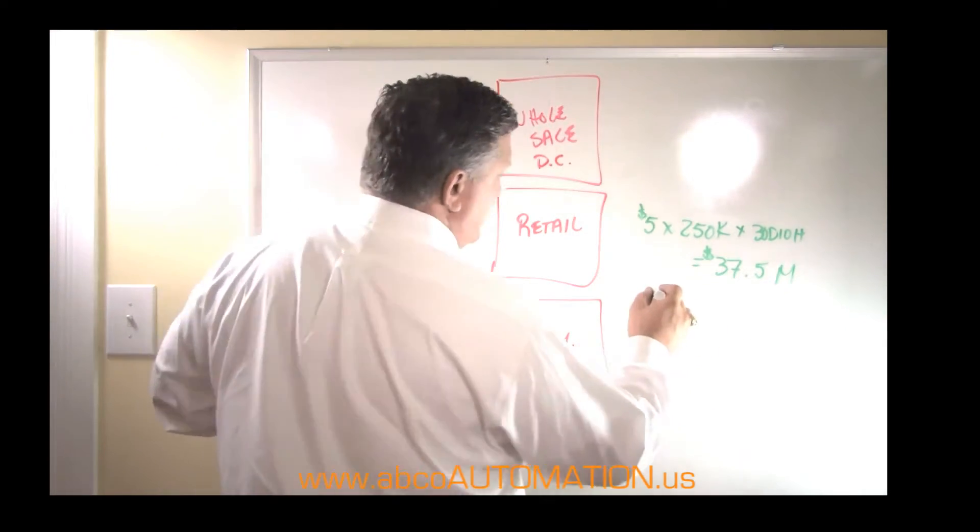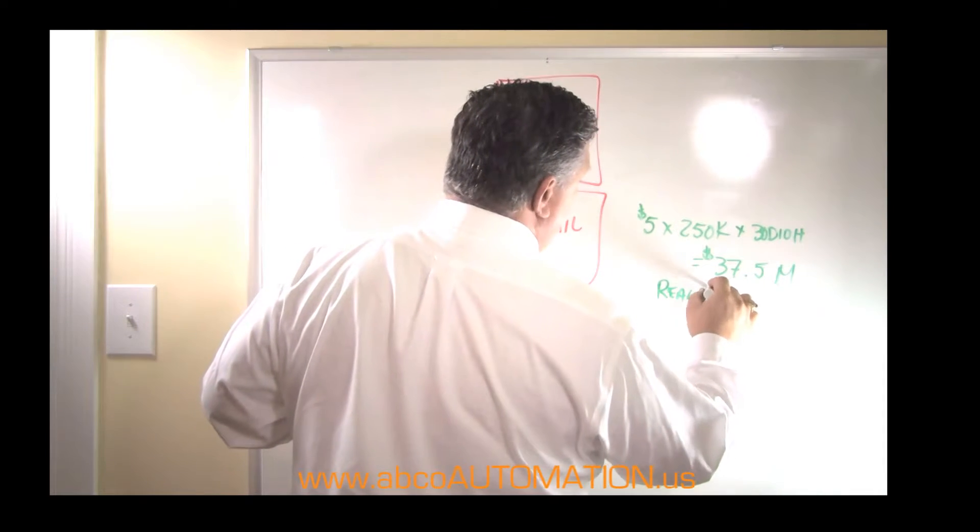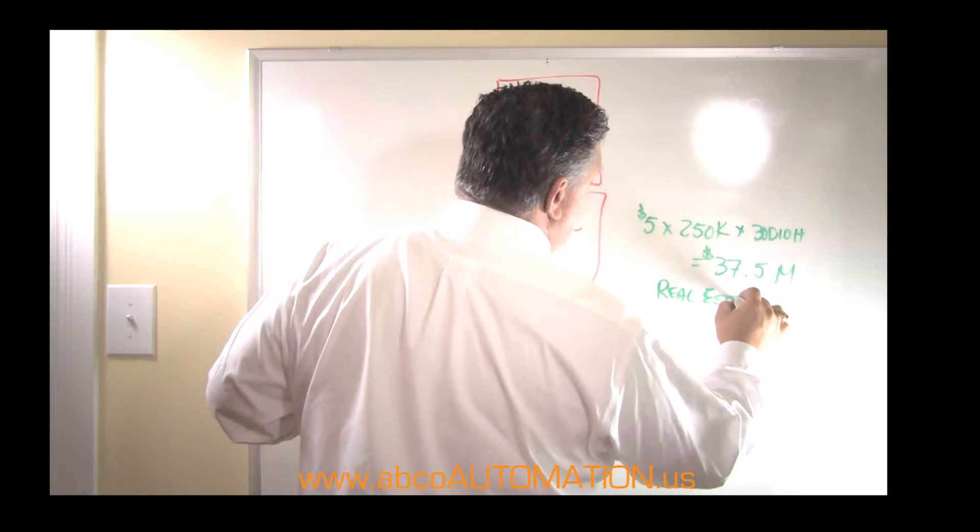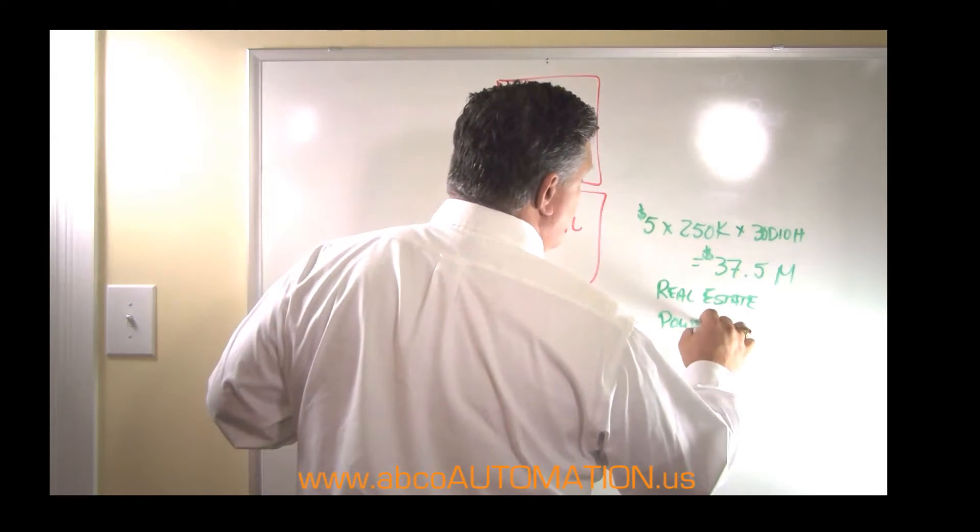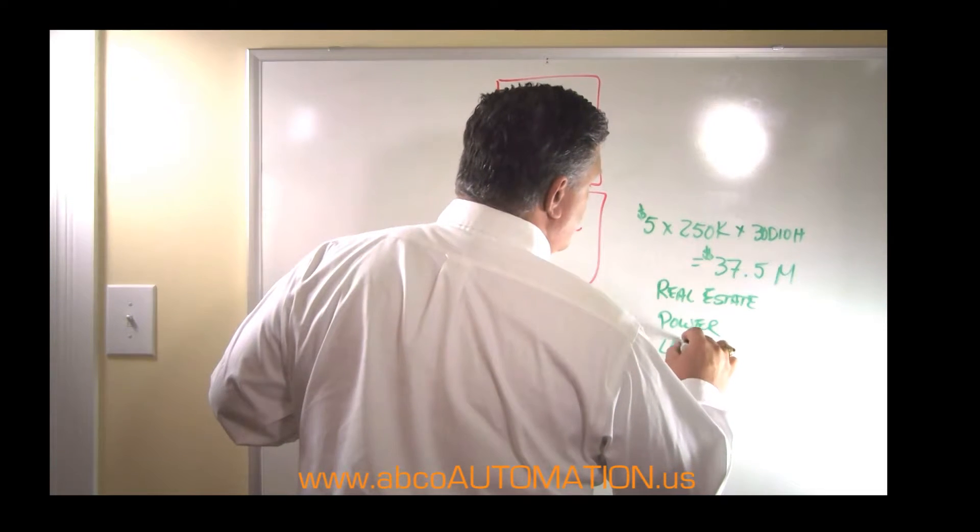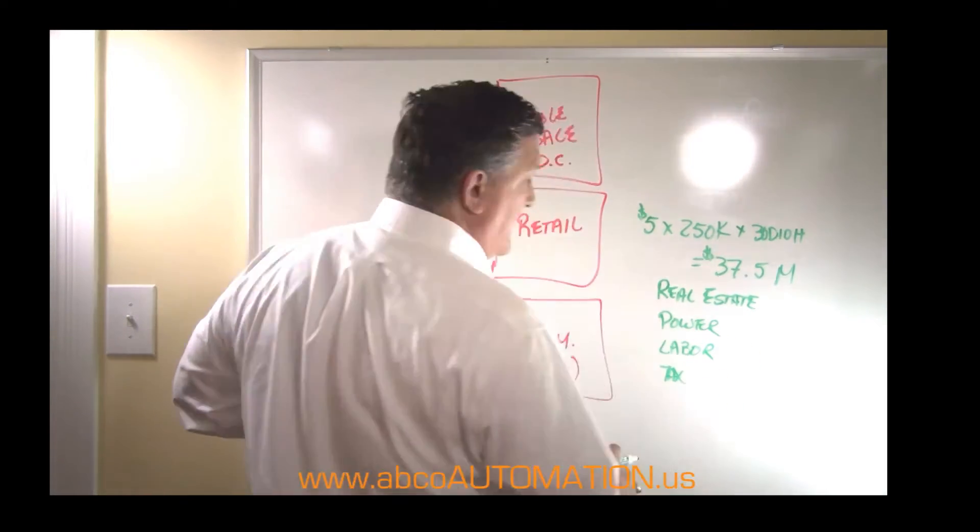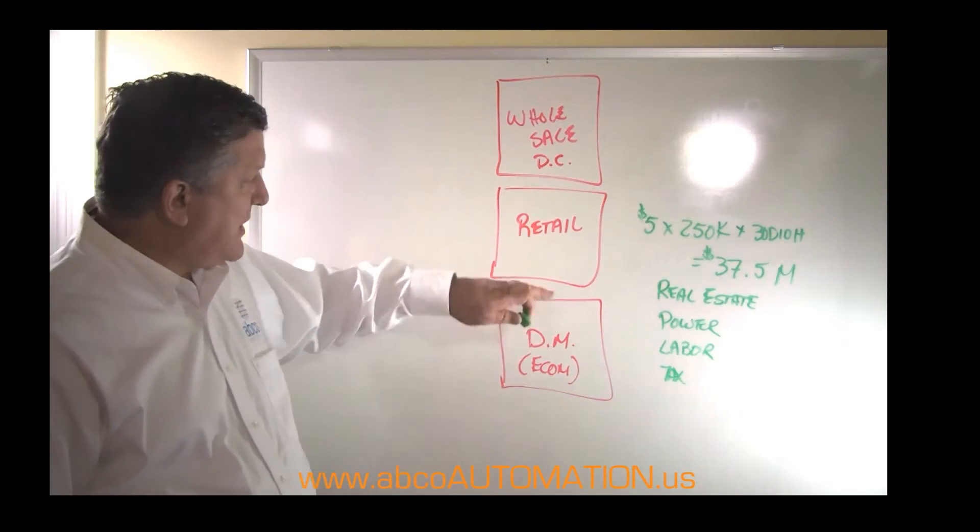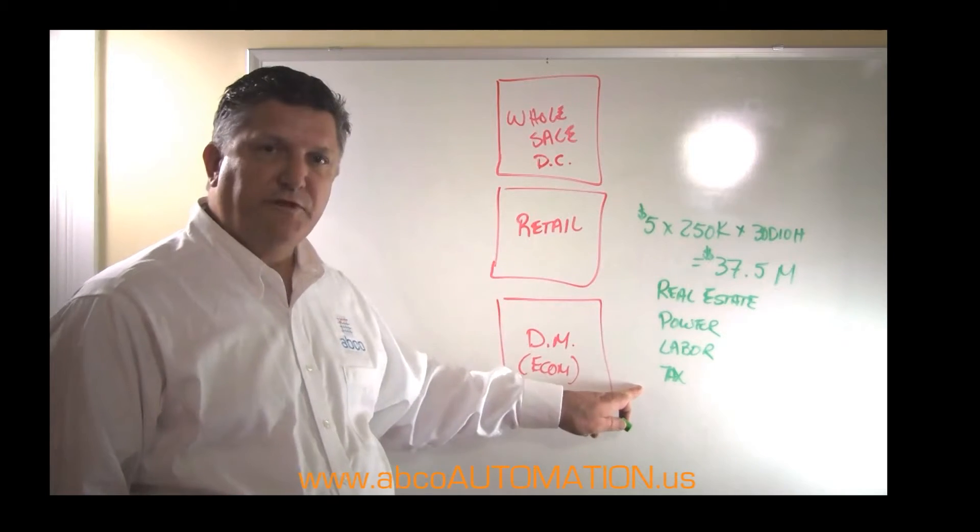Add to this cost, now the cost of real estate, because I have a building that I have to either lease or buy. I have my power cost, of course. I have my labor cost. I have taxes and fees. And so every time I add another distribution center box, I incur all of these costs.